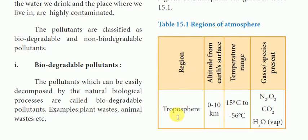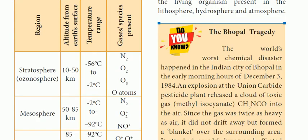The troposphere is the first region from the surface of the Earth. The temperature range of the troposphere spans from 0 to 10 km altitude, with temperatures ranging from 15 degrees to -56 degrees Celsius. The gases present include nitrogen, oxygen, carbon dioxide, water, and water vapour.